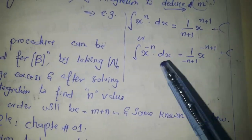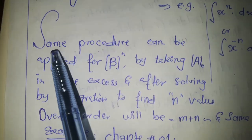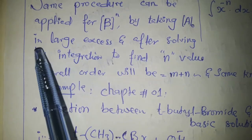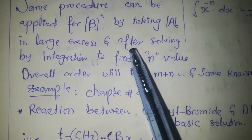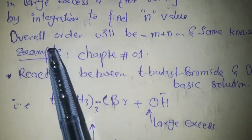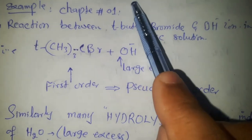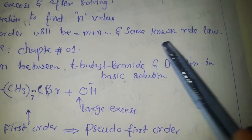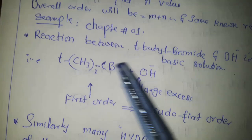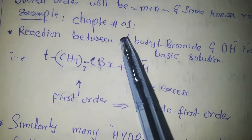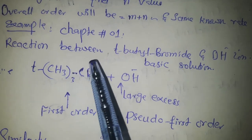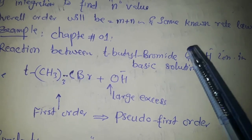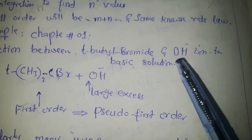The same procedure can be applied for reactant B by taking reactant A in large excess. After solving by integration to find the value of N, the overall order of the reaction will be M plus N, and the full rate law can be written accordingly. In the first chapter, we studied an example of such reactions where one reactant was taken in large excess and the rate was independent of that particular reactant.